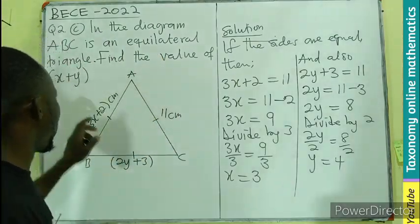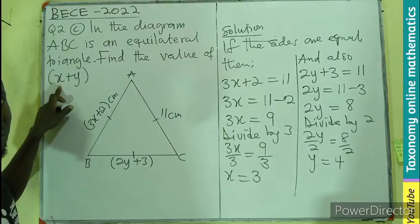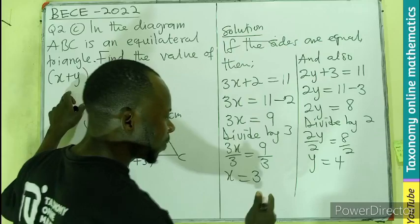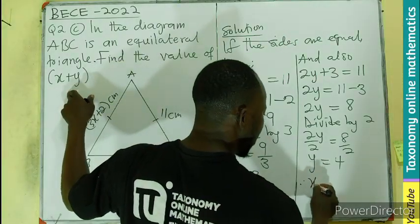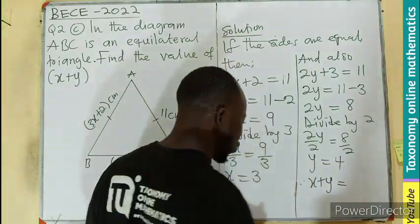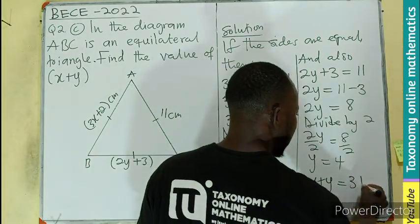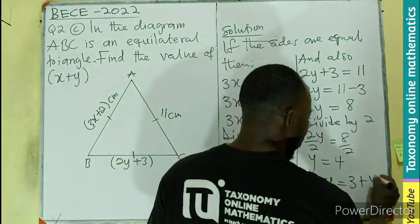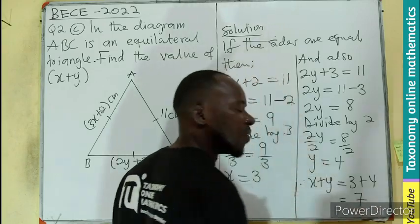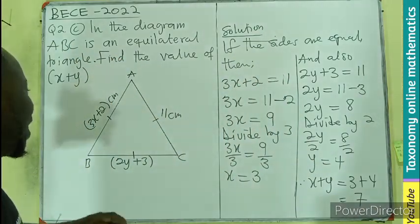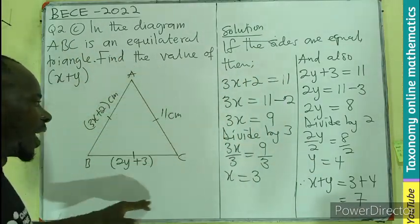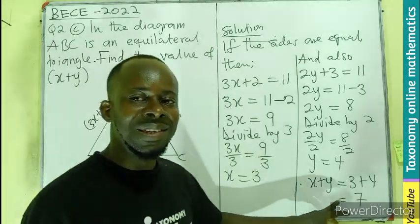But what is the question looking for? The X that we found plus the Y that we found. So therefore, X plus Y equals to, what value do we have for X? That would be 3. What value do we have for Y? That would be 4. And that would give us 7. So the sum of X and Y from here is going to be 7.